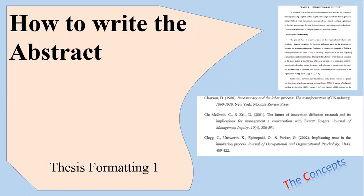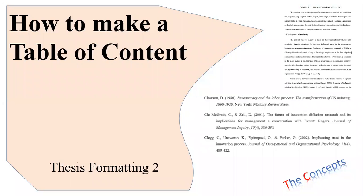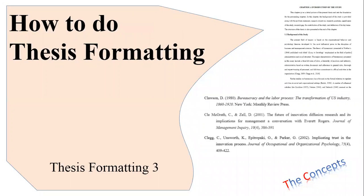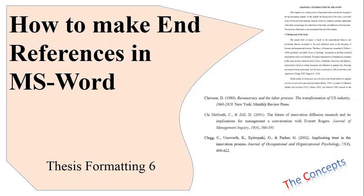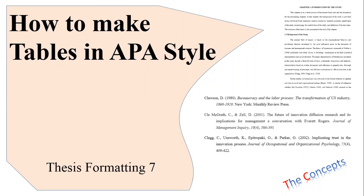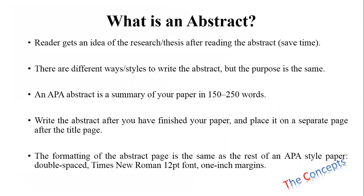Just a short introduction to this series: today's video will cover how to write the abstract, including the different elements of the abstract and some do's and don'ts. In coming videos, we'll also be talking about how to make a table of contents, how to make chapters, formatting like line spacing, alignment, indentation, how to cite references in APA, how to make end references or bibliography using MS Word, and how to make tables in APA.